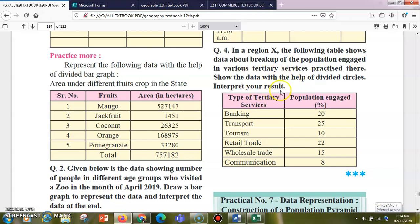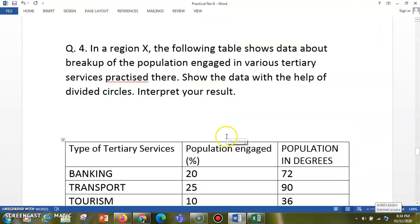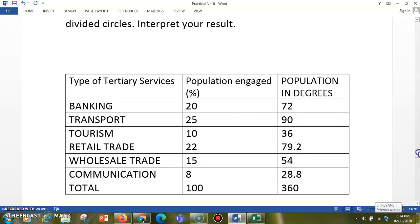We already have this question here. Now the population engaged in the tertiary is given in percentage format, and to present it in the form of divided circle. The question here is divided circle, not the divided bar graph. So in the case of divided circle, you have to convert these things into degrees.